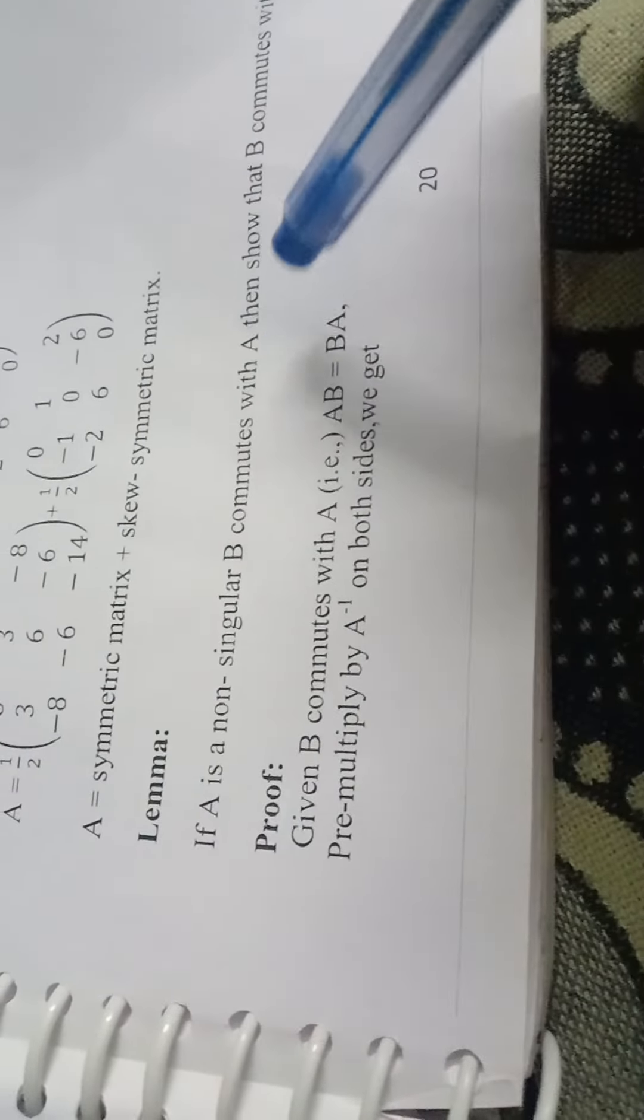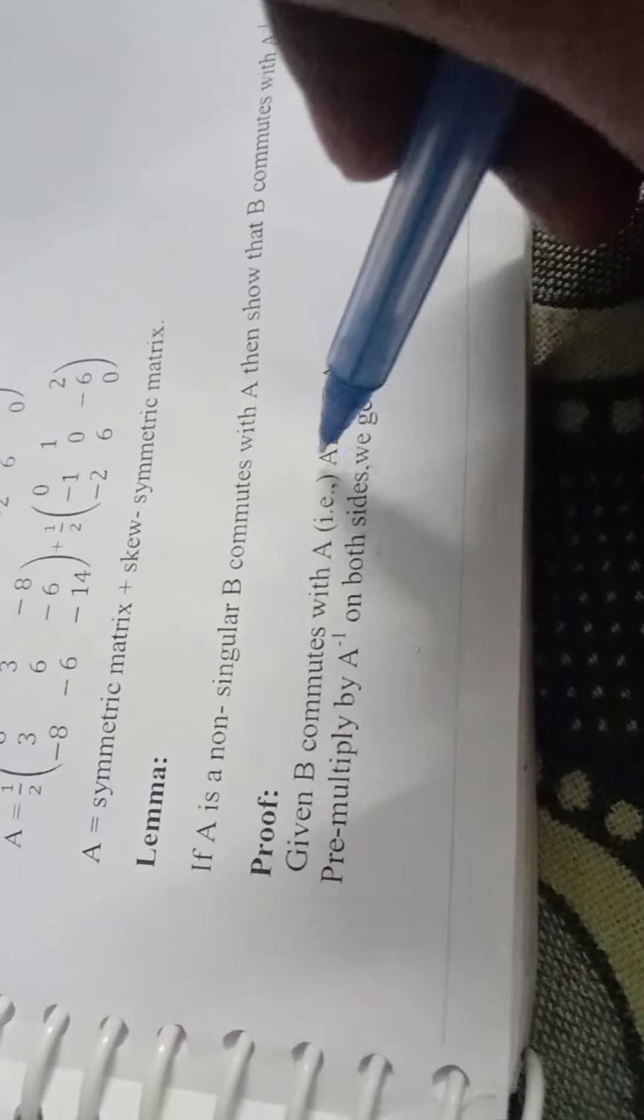If A is a non-singular, B commutes with A, then show B commutes with A inverse. This is the form of commutative form, that is AB = BA. We have to pre-multiply by A inverse.